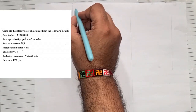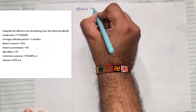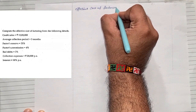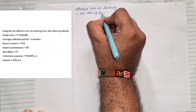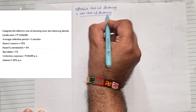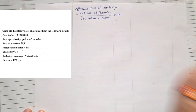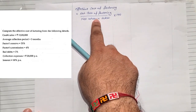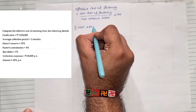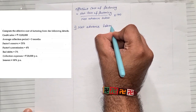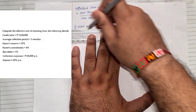We will note down the formula. The effective cost of factoring equals net cost of factoring upon net advance taken, multiplied by 100. Now for that we need to find the numerator and denominator. The very first thing we always need to find is the net advance taken.